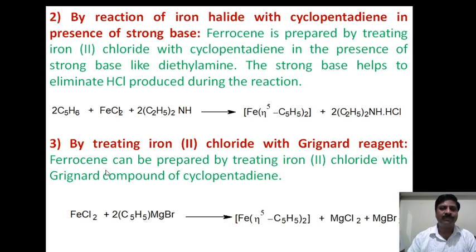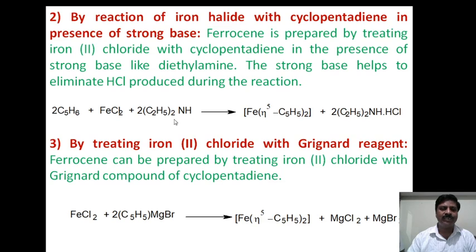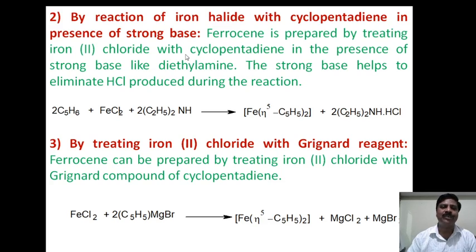The second method for preparation of ferrocene is by reaction of iron halide with cyclopentadiene in the presence of a strong base. Here the strong base used is a secondary amine — diethylamine. When cyclopentadiene reacts with ferrous chloride in the presence of diethylamine, it forms ferrocene with liberation of diethylammonium hydrochloride salt.